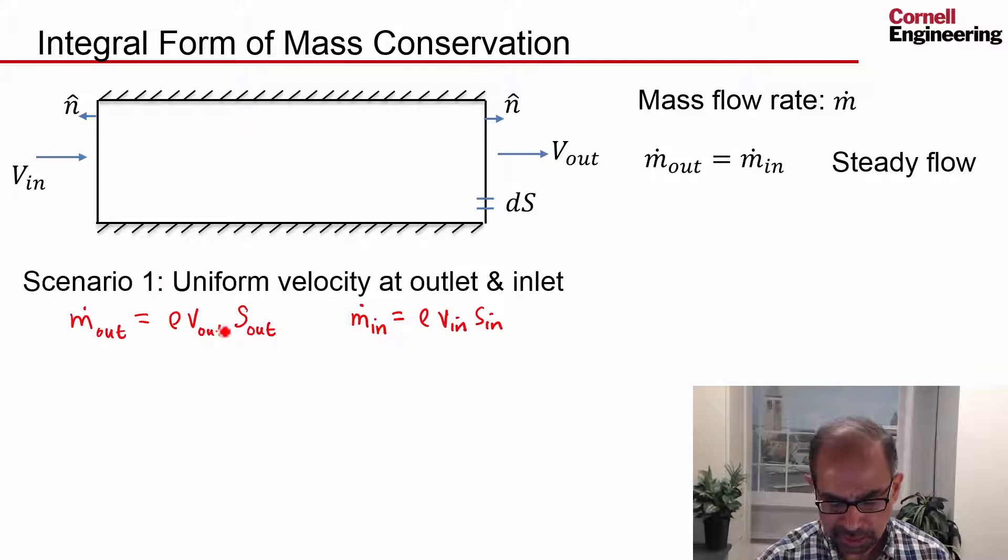And we can understand this expression intuitively because if I increase the density, then there's going to be more mass flow rate through that surface. If I increase the velocity at the outlet, then there's more mass flow rate through there. If I increase the area, again, there's more mass flow out through there. So one can understand that intuitively.